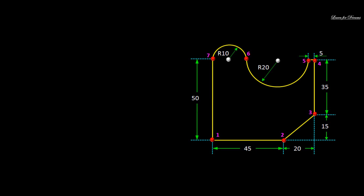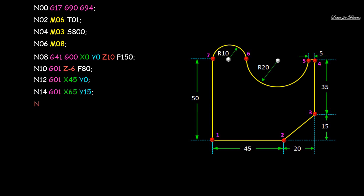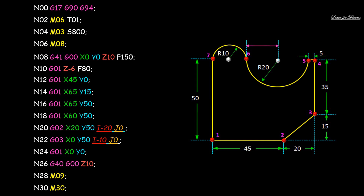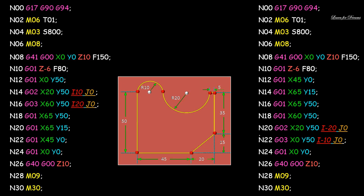Now if I mark the points differently and try to get the required layout, the coordinates in the program will change. Here we concentrate on the I and J values: I value will be minus 20, and similarly I value will be minus 10, J value will be 0, because point 7 is on the left side of the center point. I have now shown both ways — when I and J values are positive and when they are negative.